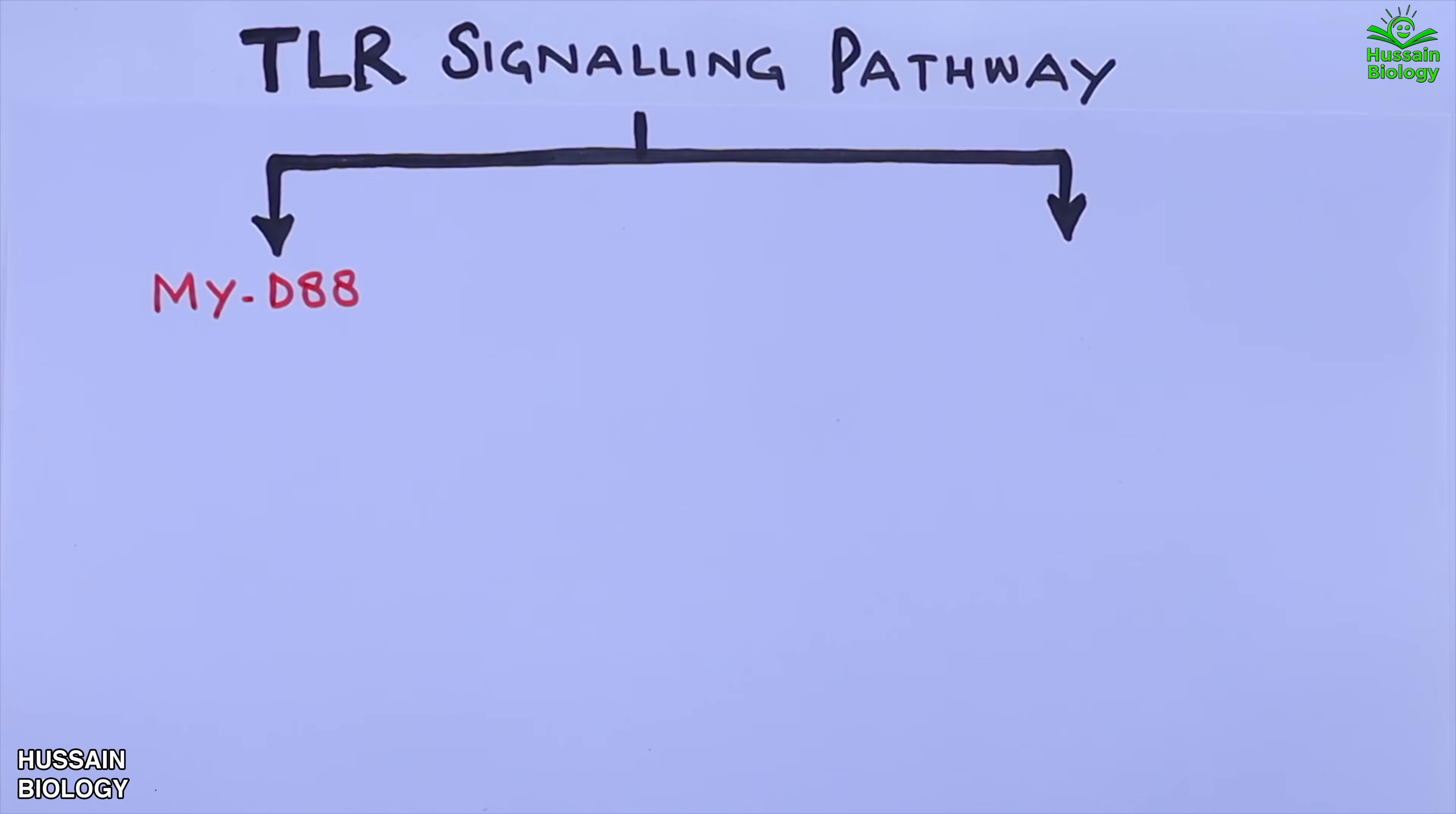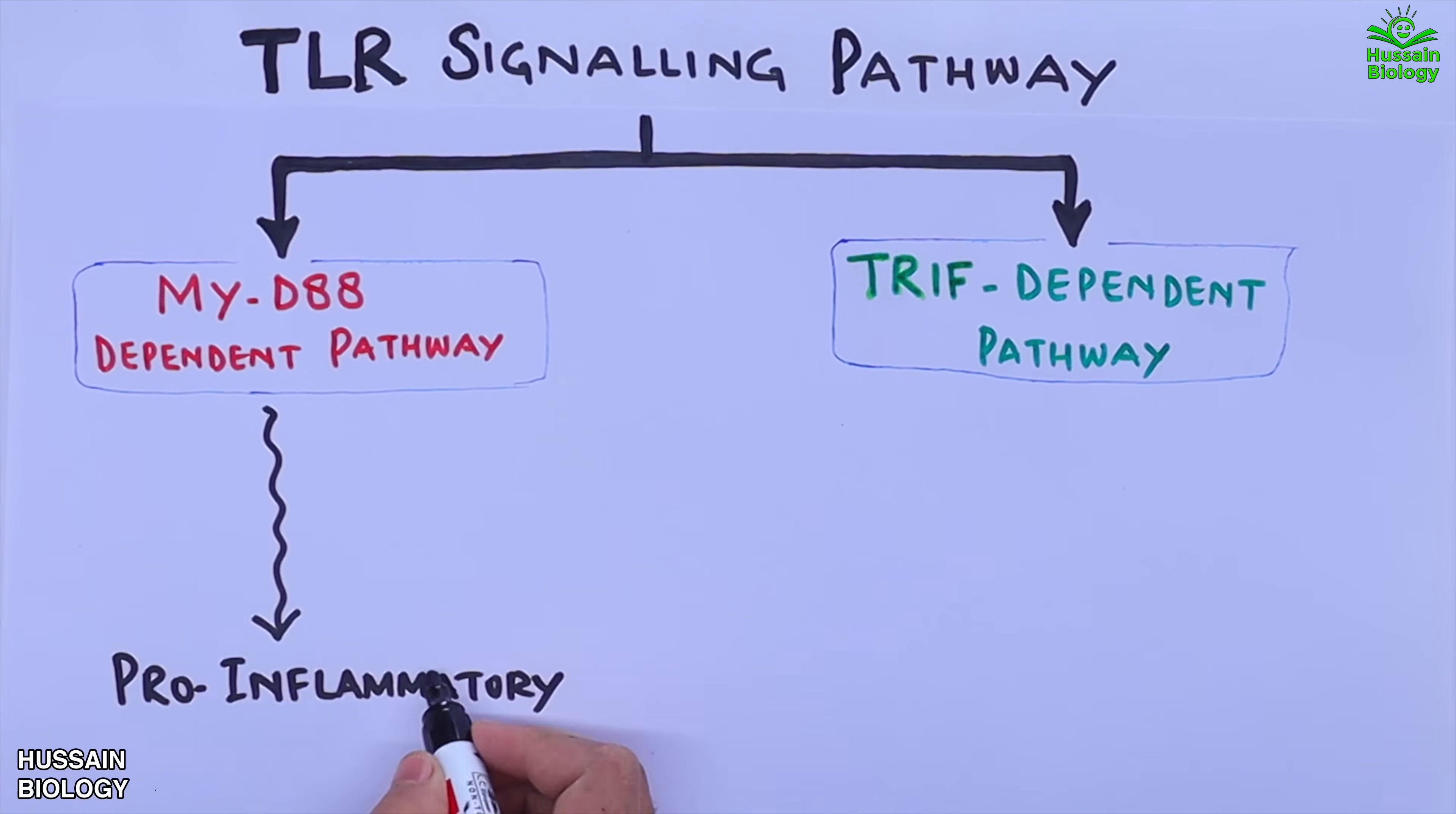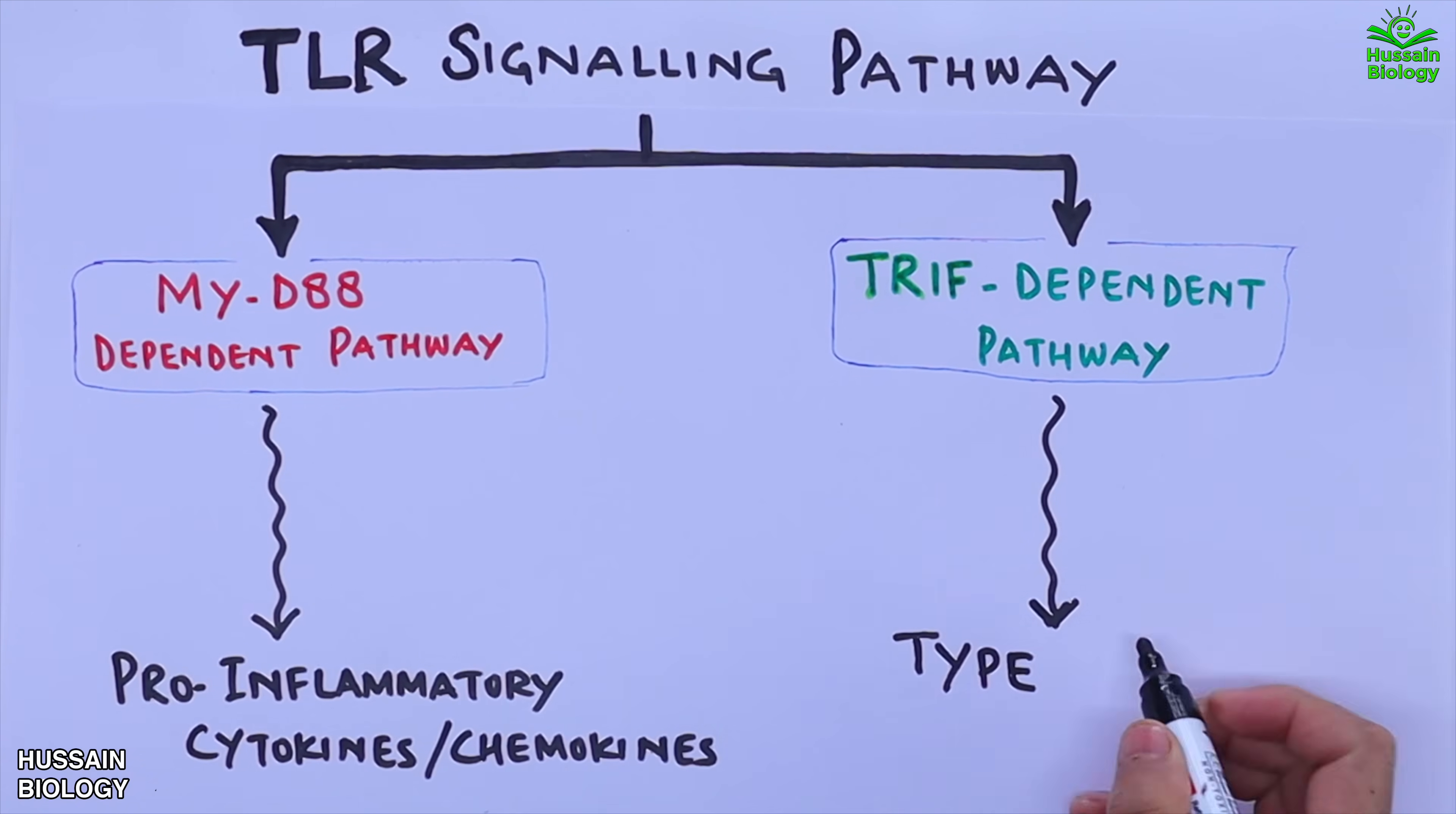One is the myD88 dependent pathway and second one is the TRIP dependent pathway. The first one that is myD88 dependent pathway leads to production and activation of pro-inflammatory cytokines and chemokines. Whereas the TRIP dependent pathway leads to production and activation of type 1 interferons.